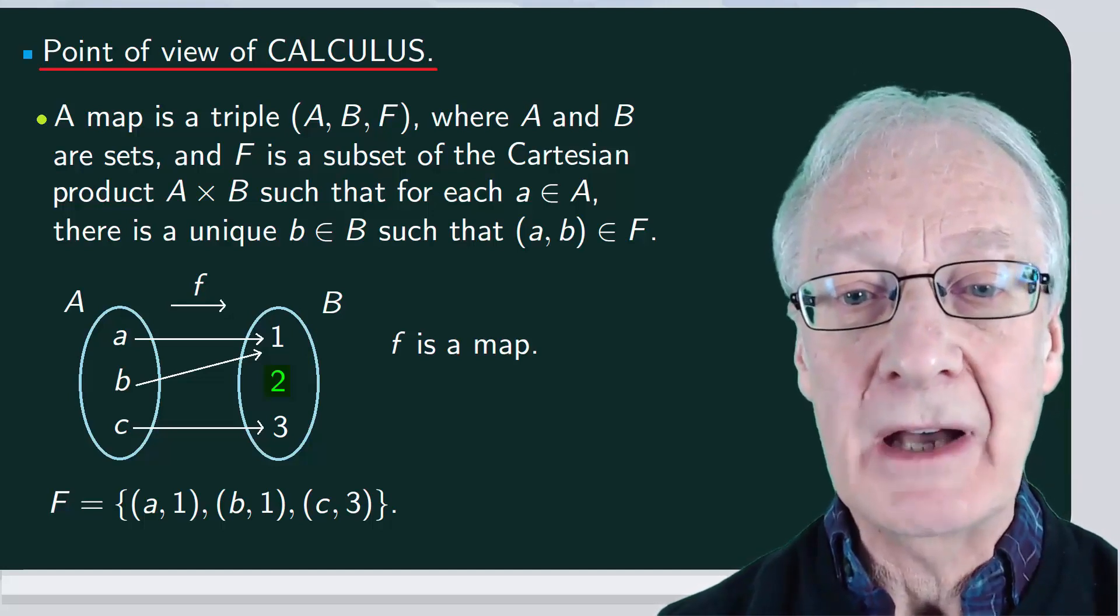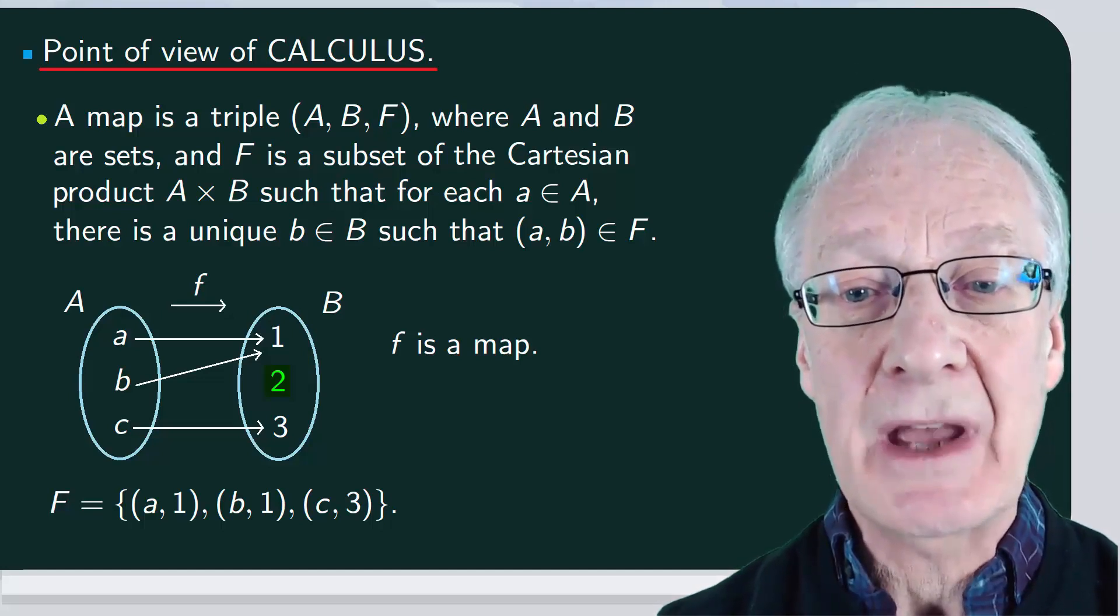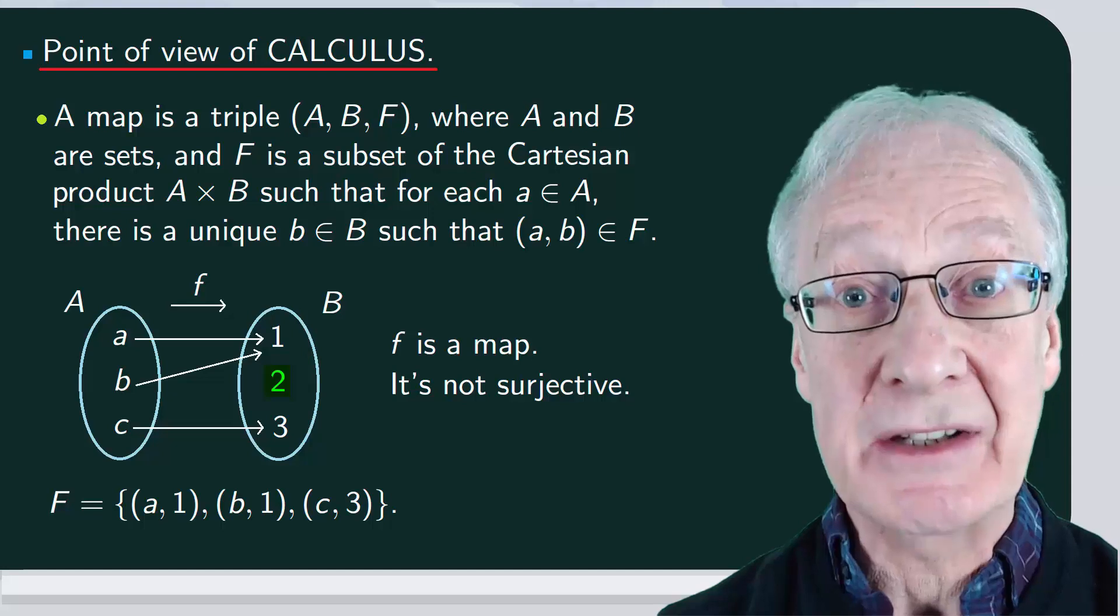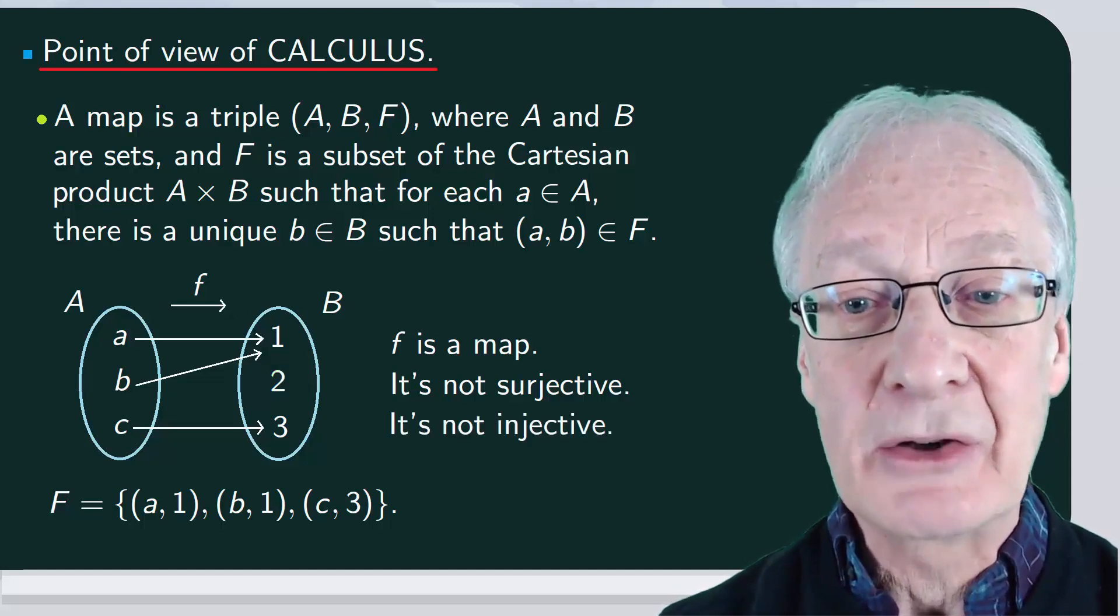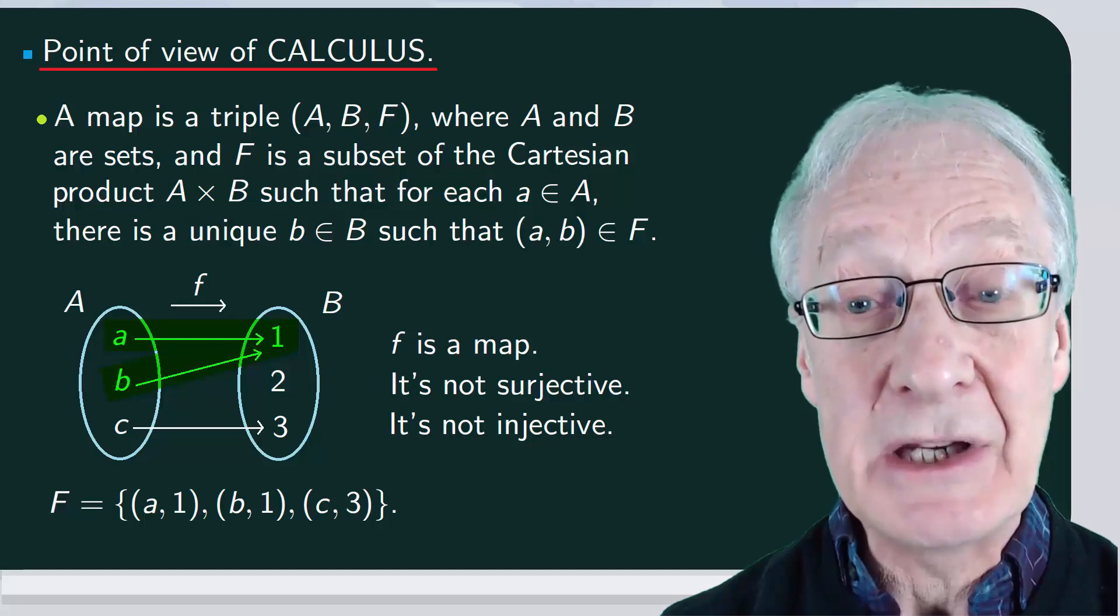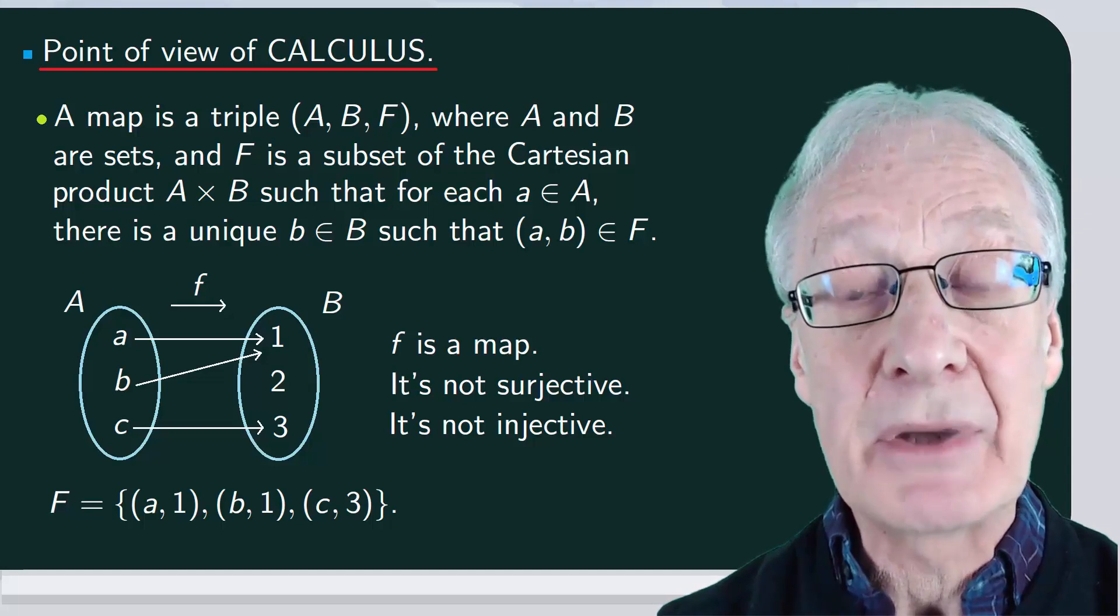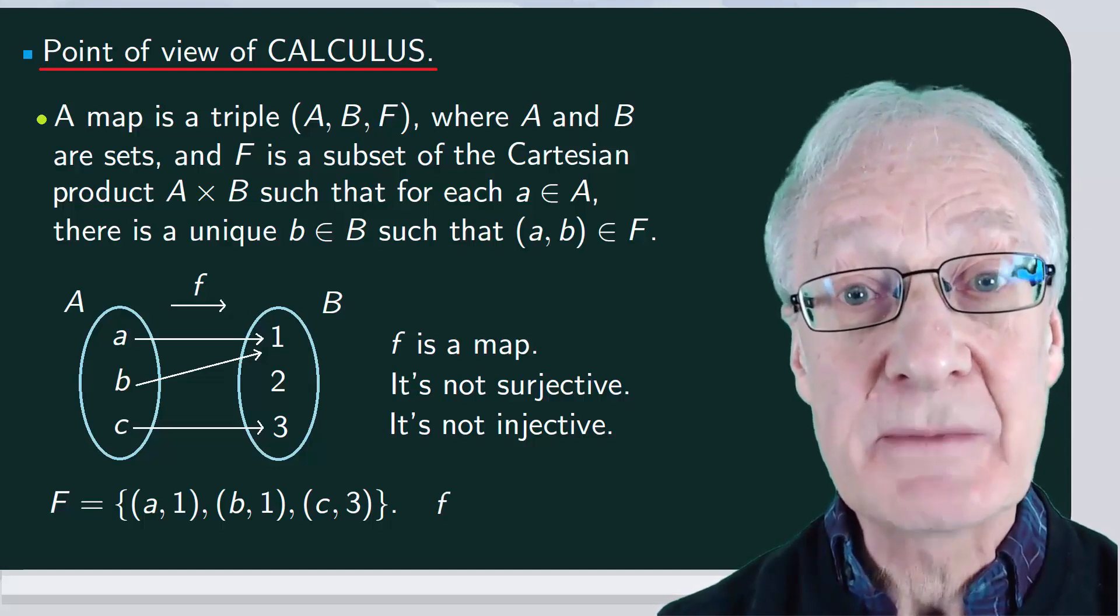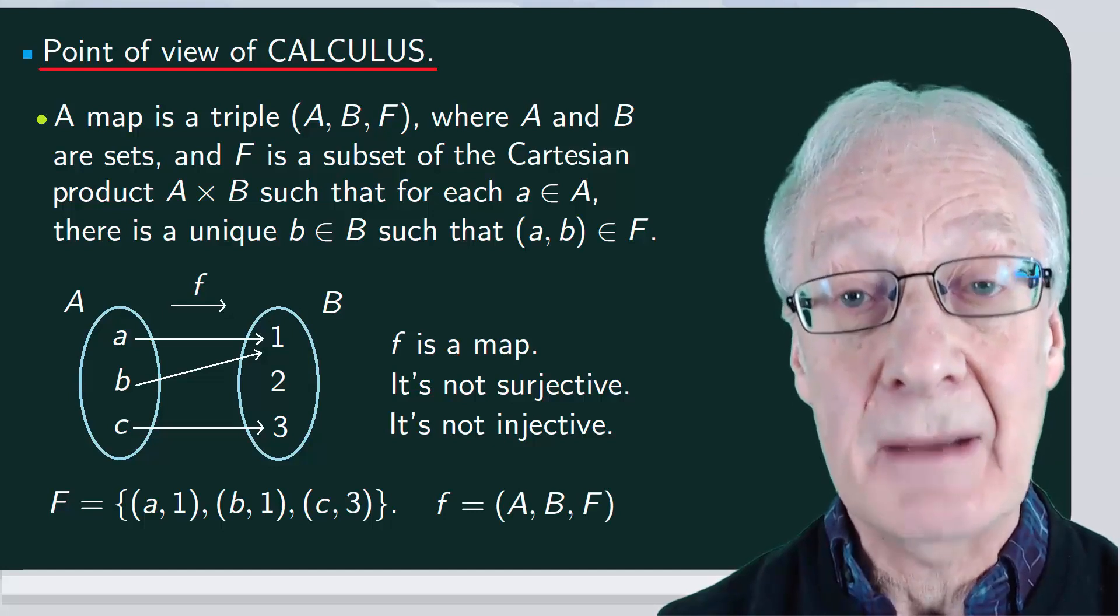We don't need to worry about the elements of the final set. In this case, we have a map that isn't surjective. It's not injective either, because a and b have the same image, but we still have a map. In our case, the map represents the function small f, which is the triple A, B, capital F.